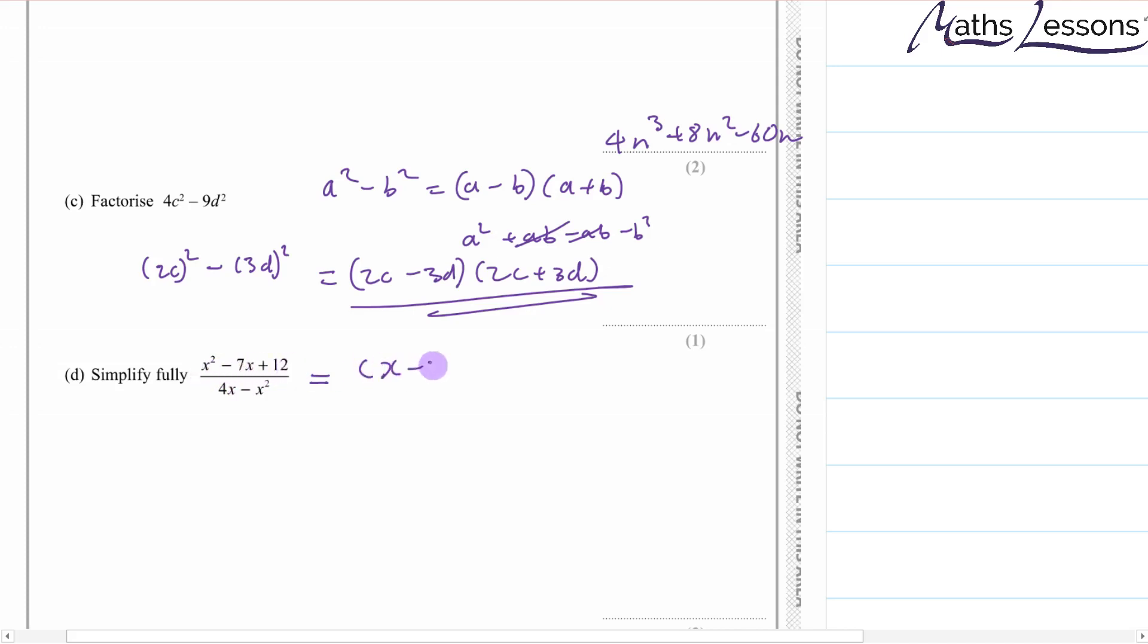We get x minus 3, x minus 4. Here we've got a common factor of x, so we get 4 minus x. Now we've got something quite similar, top and bottom here. An x minus 4 and a 4 minus x, but they're not quite the same. They need to be exactly the same. We've got a plus x and a minus x, a minus 4 and a plus 4. But if we times one of these things by minus 1, then it becomes the same.